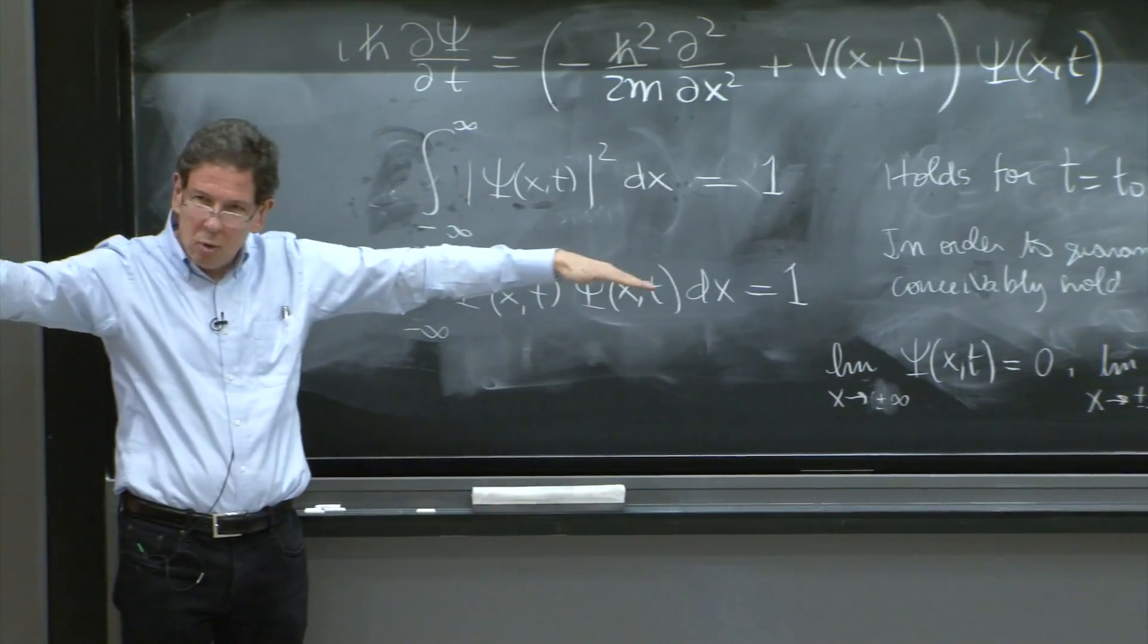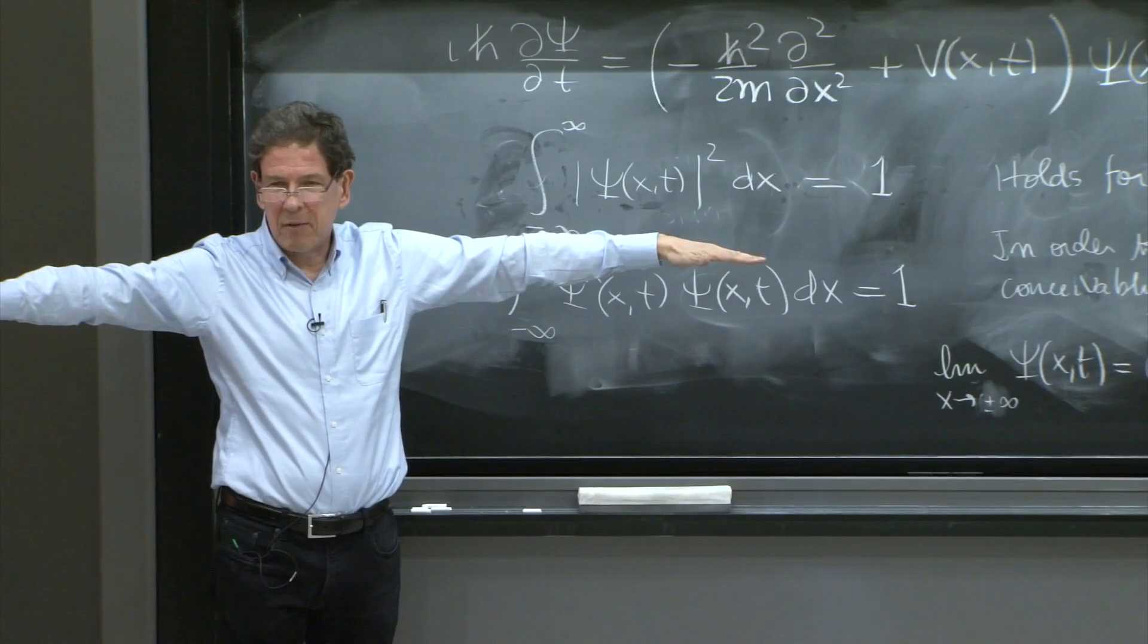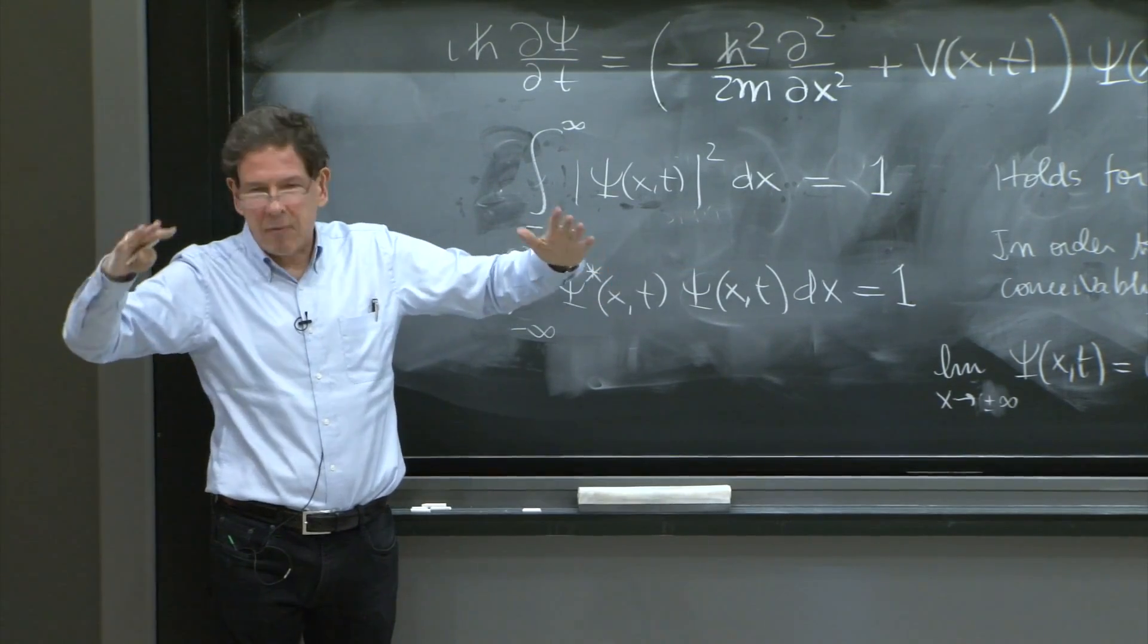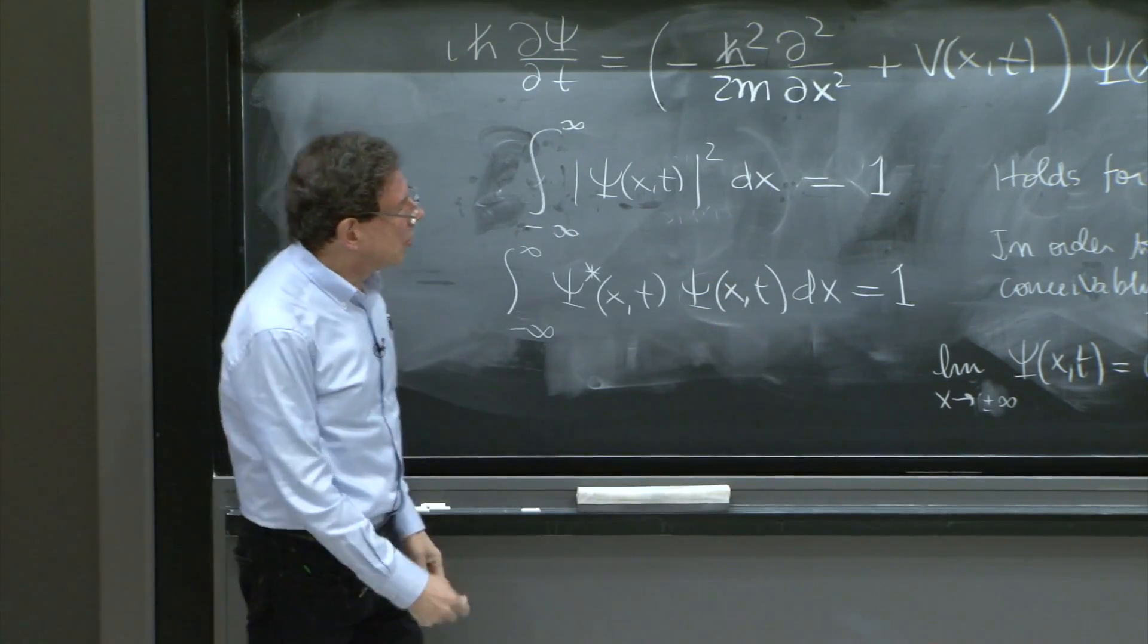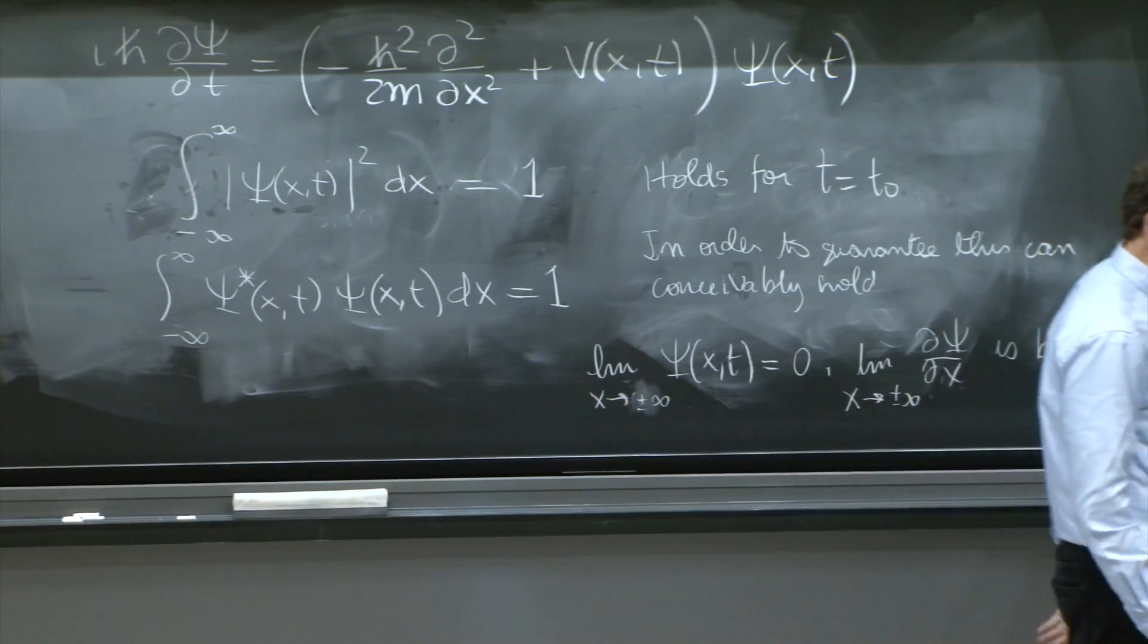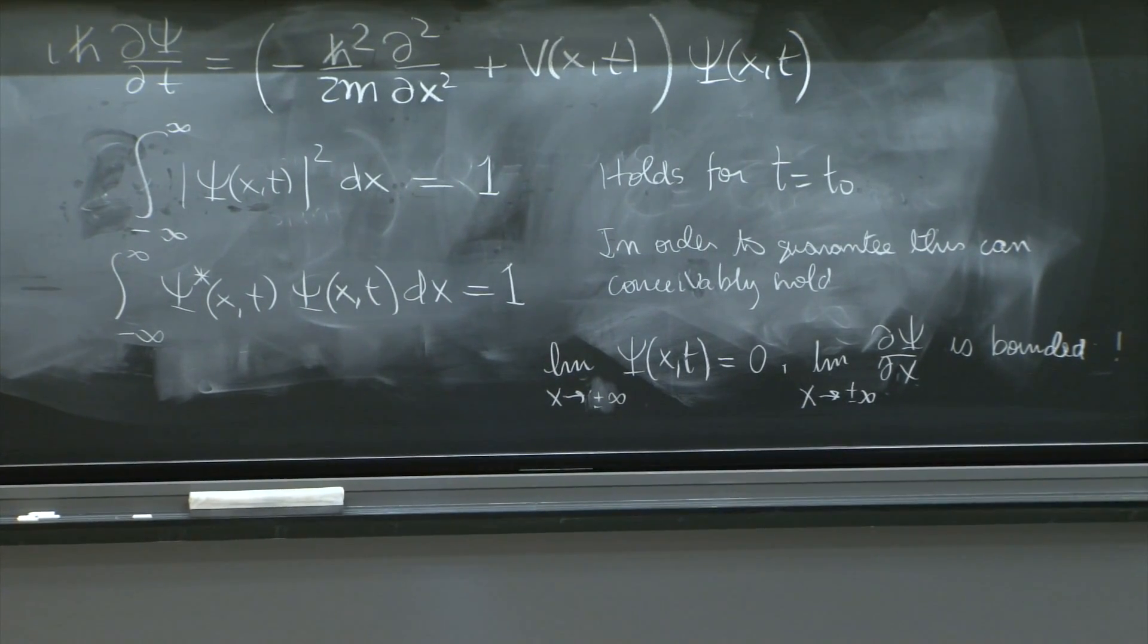So the only thing I'm saying is that when you see a wave function that satisfies this property, you know that unless the function is extremely crazy, it's a function that goes to 0 at plus or minus infinity. And its derivative presumably also goes to 0, but it will be enough to say that it maybe goes to a number.